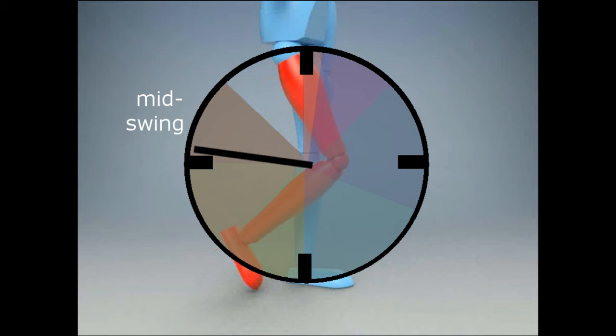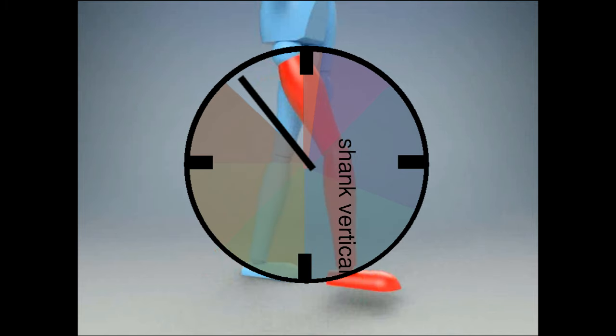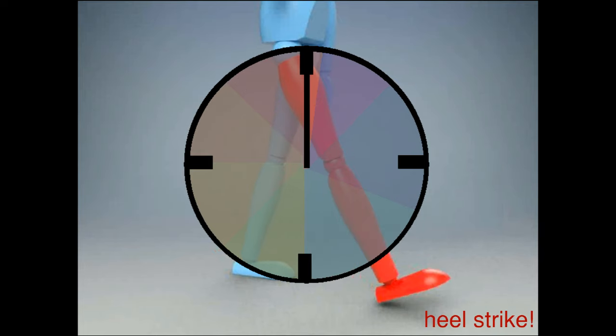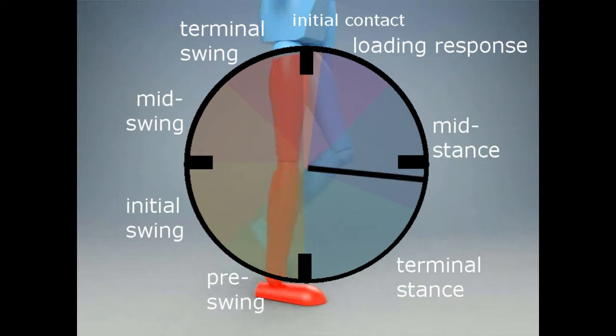Mid-swing is 12% from then until the lower leg is vertical. Terminal swing is the remaining 13% of the cycle until the next contact, and the cycle goes again.